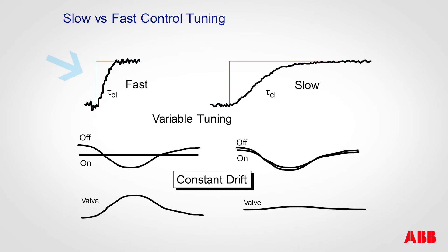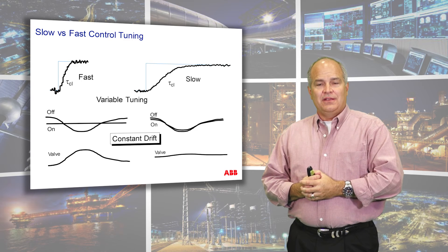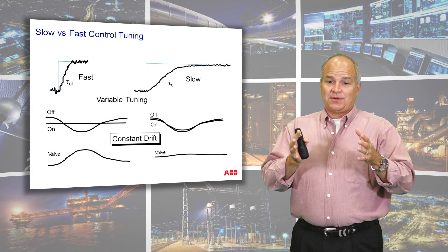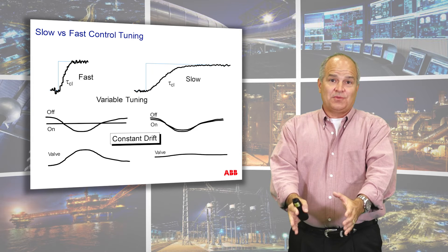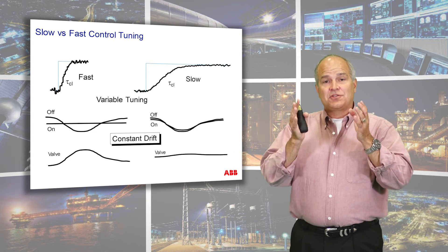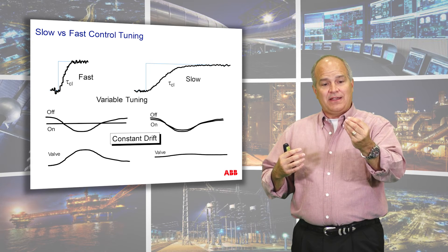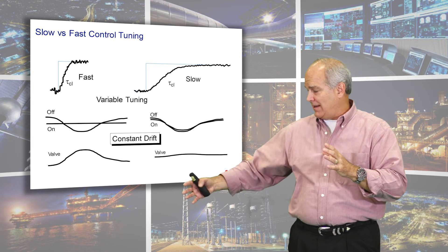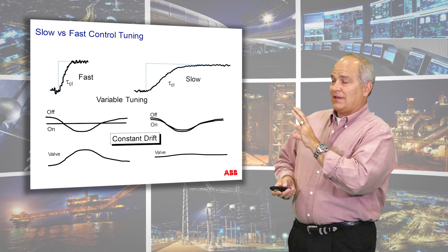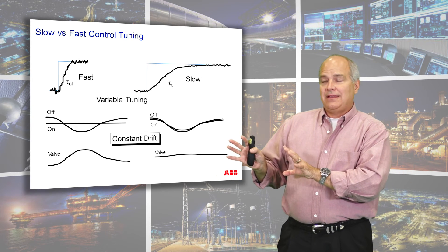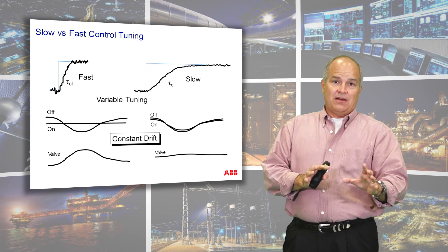If I've tuned the loop fast as compared to the low frequency disturbance, I'm able to redirect that energy into the actuation device. A disturbance never really goes away — it just shows up someplace else. So the disturbance will either show up in the process or show up in the actuation device. If you don't want it to show up in either place, you need to track down the source and remove it at the source. Whenever you can fix a disturbance by finding its root cause, it can have a huge cascading impact all the way through your process. If I've tuned my loop fast, I'm able to redirect the energy of the lower frequencies into my valve or final control element.